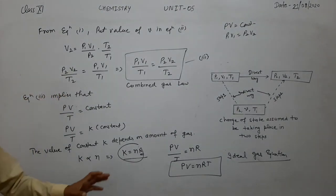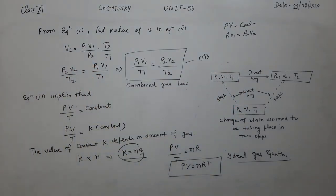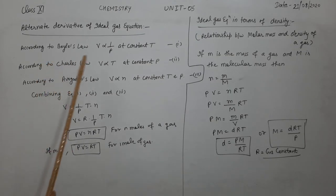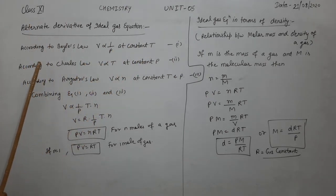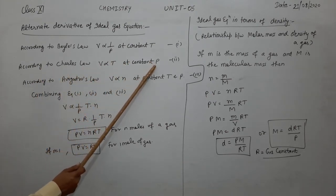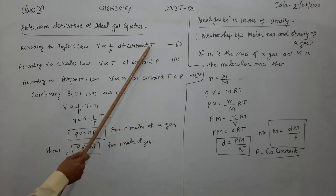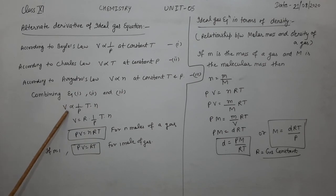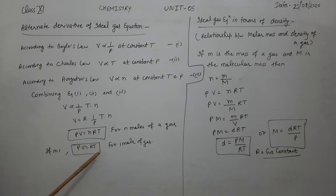This derivation was based on the two-step process described in the figure. It can also be derived another way. From Boyle's law, volume is inversely proportional to pressure at constant temperature. From Charles's law, volume is directly proportional to temperature at constant pressure. From Avogadro's law, volume is directly proportional to number of moles N at constant temperature and pressure. Combining all three: V is proportional to NT ÷ P, which gives PV = NRT.